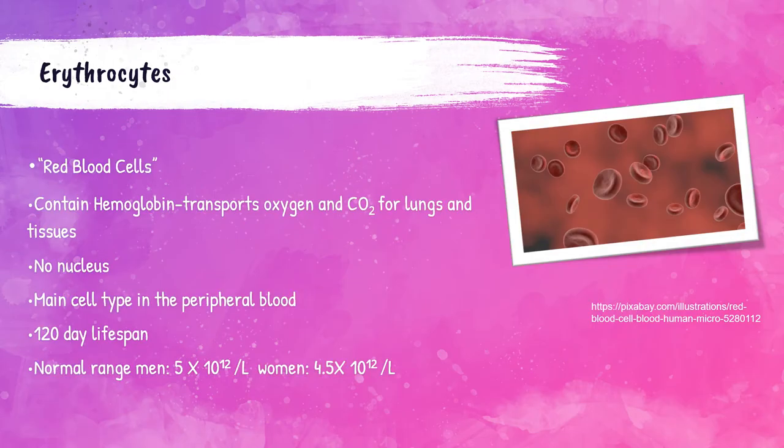The main cell type in the peripheral blood are the erythrocytes, or red blood cells. They contain hemoglobin, which is a protein that carries oxygen. A mature erythrocyte does not contain a nucleus. The normal range for red blood cells in men is 5 × 10¹² per liter and 4.5 × 10¹² per liter in women.